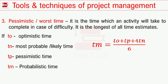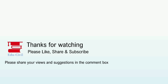The PERT expected time formula uses: t0 (optimistic time), tn (most likely time), and tp (pessimistic time) to represent the probabilistic expected time. The formula is: te = (t0 + 4tn + tp) divided by 6.